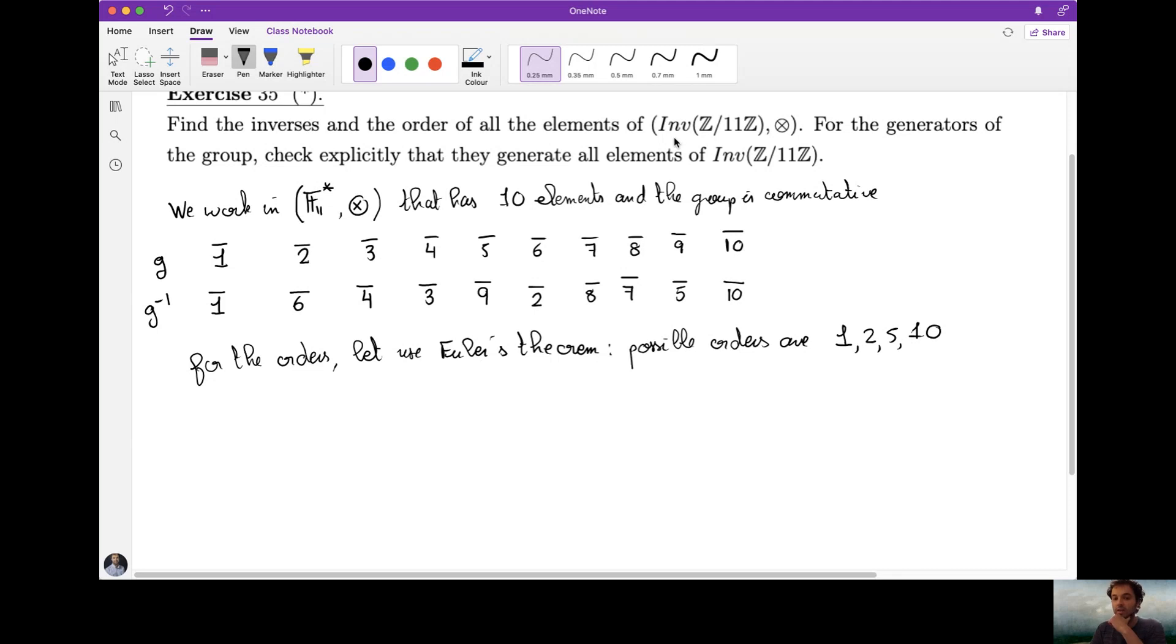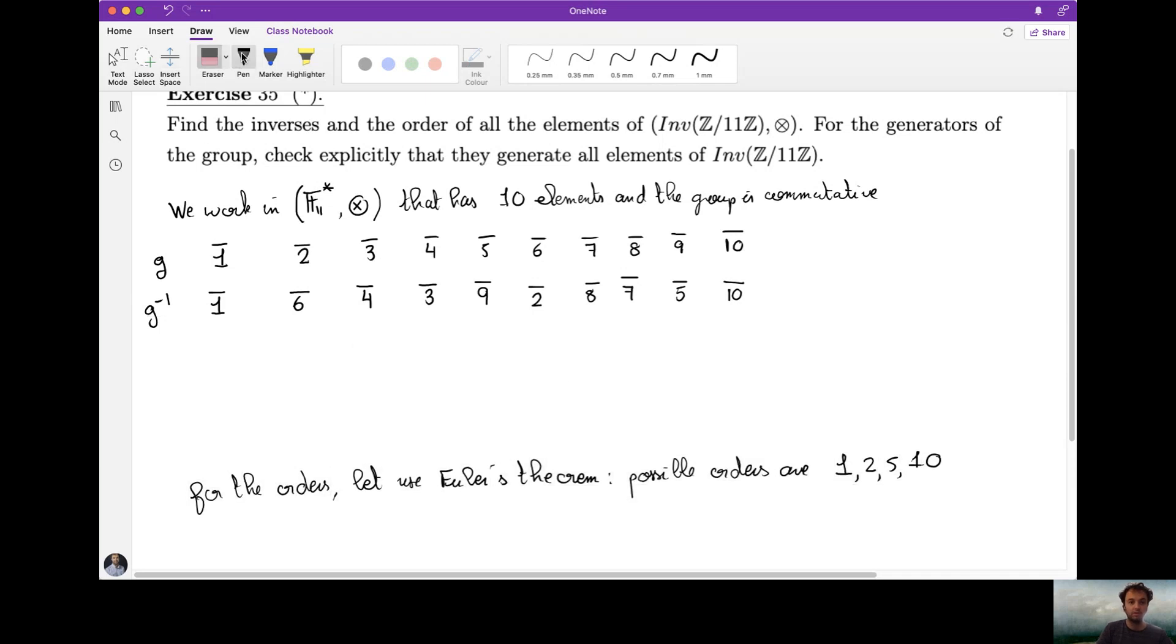These are the only possible orders. Therefore, when we want to find the order of an element, we will just compute that element to the power 2 and that element to the power 5, and if we do not find one for any of those two, it means that the order is 10. So let us just do this again. I can put the orders here, order of g. So this first line, here we have the second line, and here we have the third line.